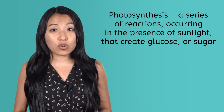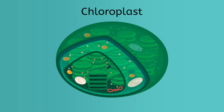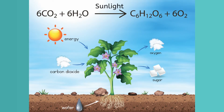The sun's energy is captured in a process called photosynthesis, which is a series of reactions occurring in the presence of sunlight that create glucose, or sugar. Photosynthesis occurs in specialized organelles called chloroplasts, which can only be found in some organisms, such as plants, algae, and special types of bacteria. The green color of this organelle, and consequently most plants, comes from the pigment chlorophyll, which is used to absorb the energy from sunlight. Once light energy is absorbed, it sets off a chain of reactions summarized by this equation: 6CO2 + 6H2O + sunlight → C6H12O6 + 6O2. C6H12O6 is the chemical formula for glucose, or sugar, which has 6 carbon atoms, 12 hydrogen atoms, and 6 oxygen atoms.